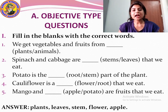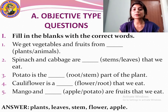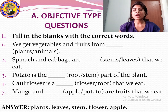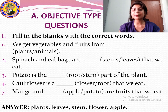Now let us start with the exercises — question and answers. The first exercise is objective type questions: fill in the blanks with the correct word. You have to choose the correct answer from the options given in the bracket.